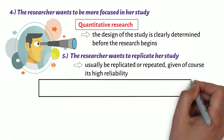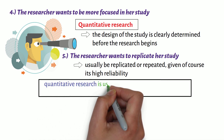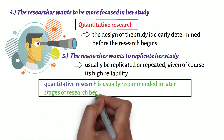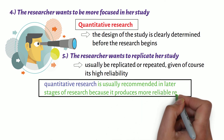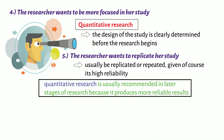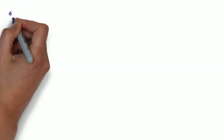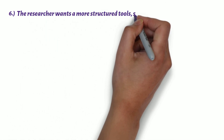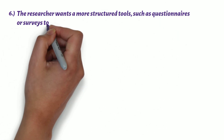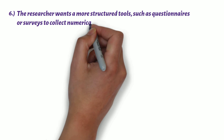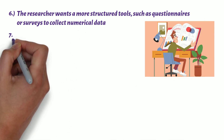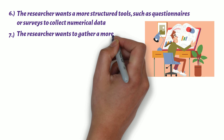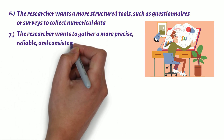In fact, quantitative research is usually recommended in later stages of research because it produces more reliable results. Sixth, the researcher wants more structured tools, such as questionnaires or surveys to collect numerical data. Seventh, the researcher wants to gather more precise, reliable and consistent data.